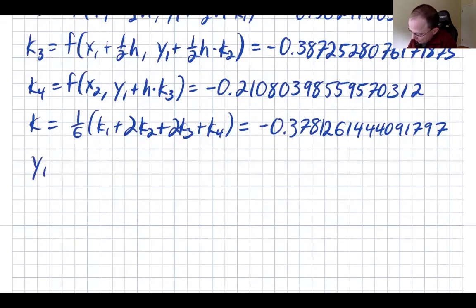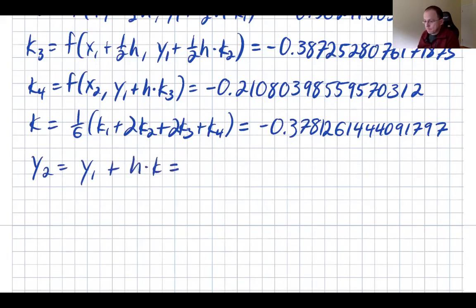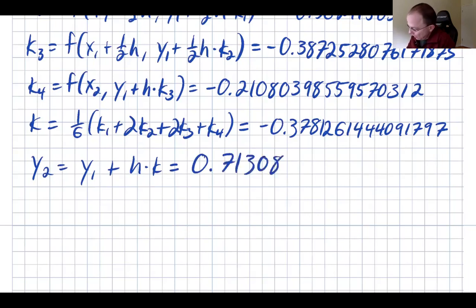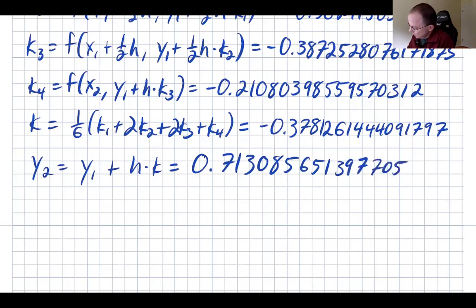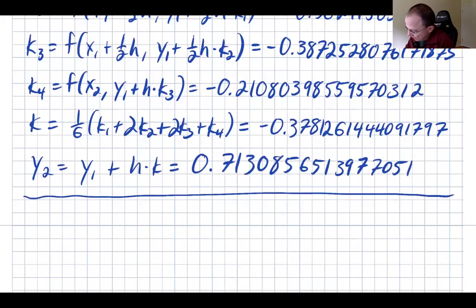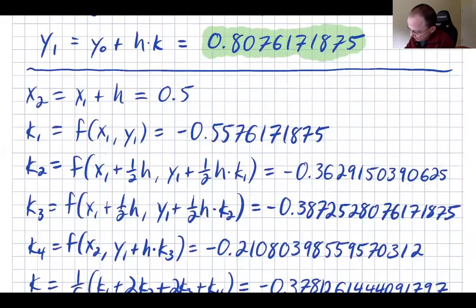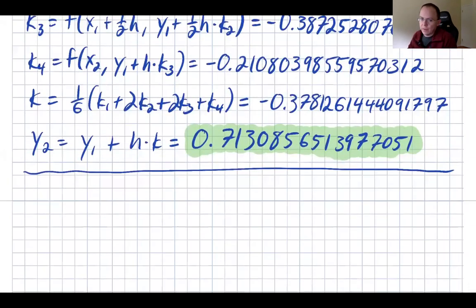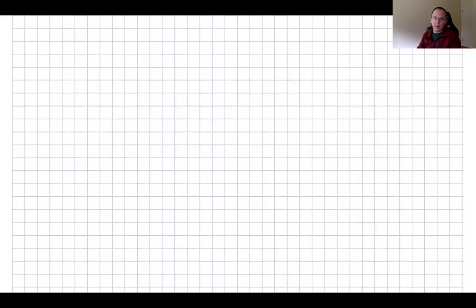Finally, y₂ = y₁ + h·K = 0.7130856513977051. And that is it — that is our value for y at x = 0.5. Now I'm going to draw up a table to summarize these results and compare with the actual solution.